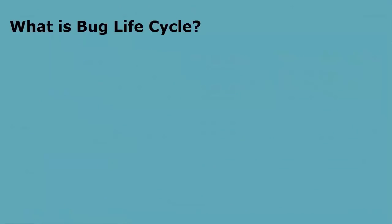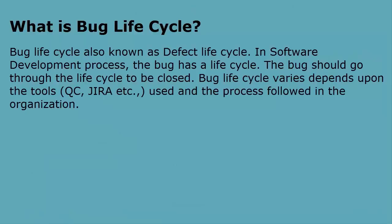What is the bug lifecycle? Bug lifecycle, also known as defect lifecycle, describes the stages a bug goes through in the software development process. The bug should go through the lifecycle to be closed. Bug lifecycle varies depending on the tools used and the process followed in the organization.